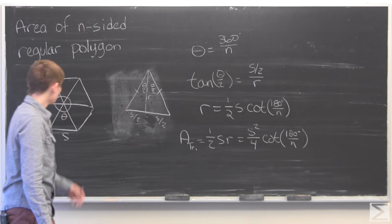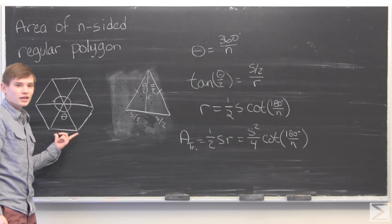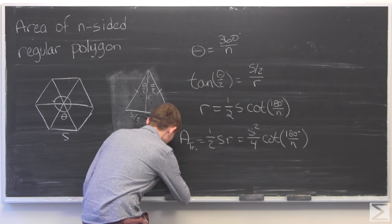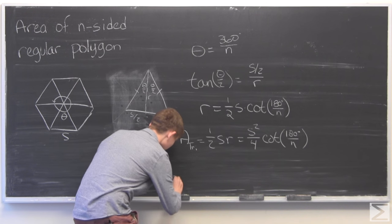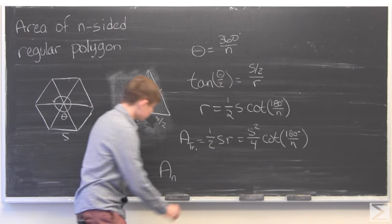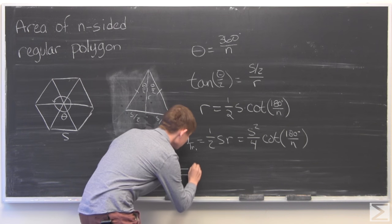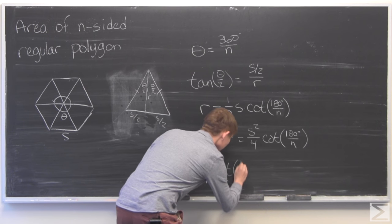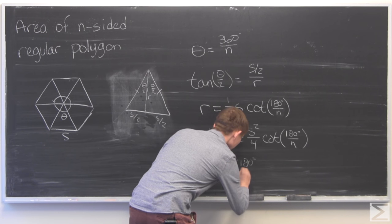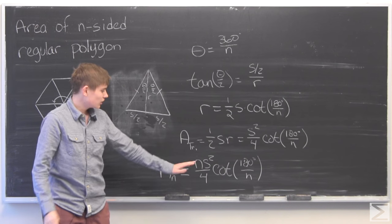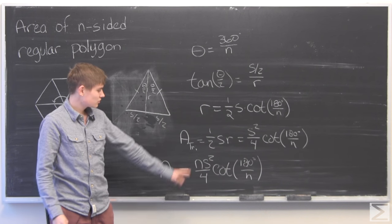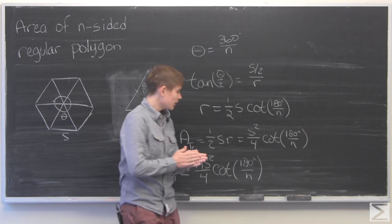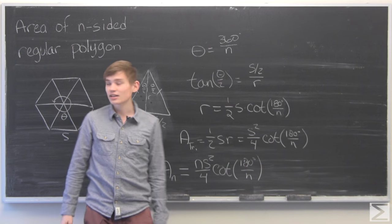And the last thing we have to do, now that we have the area of the triangle, we just have to multiply it by the number of sides, since that is how many triangles are inside the polygon. And so the area of an n-sided regular polygon is therefore equal to n times s squared over 4 times the cotangent of 180 degrees over n. And this will work with any n-sided regular polygon.